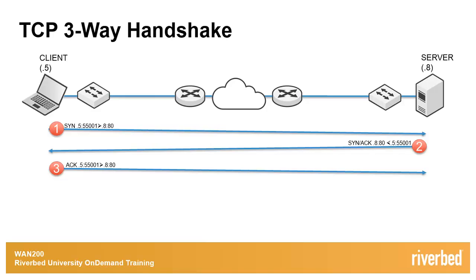Before the client actually receives data — in this case a web page from the server — a TCP three-way handshake must first be successfully exchanged between the host pair. The action of the user typing in a URL in the web browser is all it takes for the standard procedure to initiate.